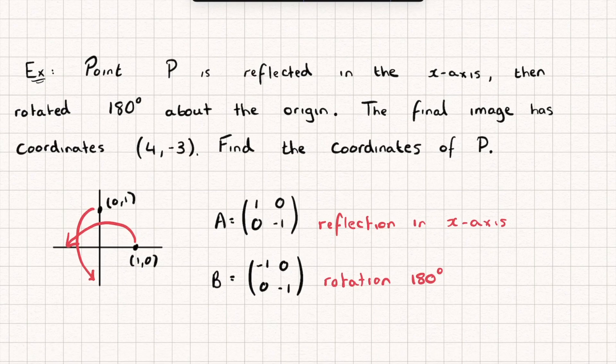So we are reflecting in the x-axis and then rotating. So if I wanted to do this in one go in one matrix I could find that by doing matrix B multiplied by matrix A and if you're unsure as to why that is then I'll link my previous video below. So we're going to take matrix B which is negative 1, 0, 0,